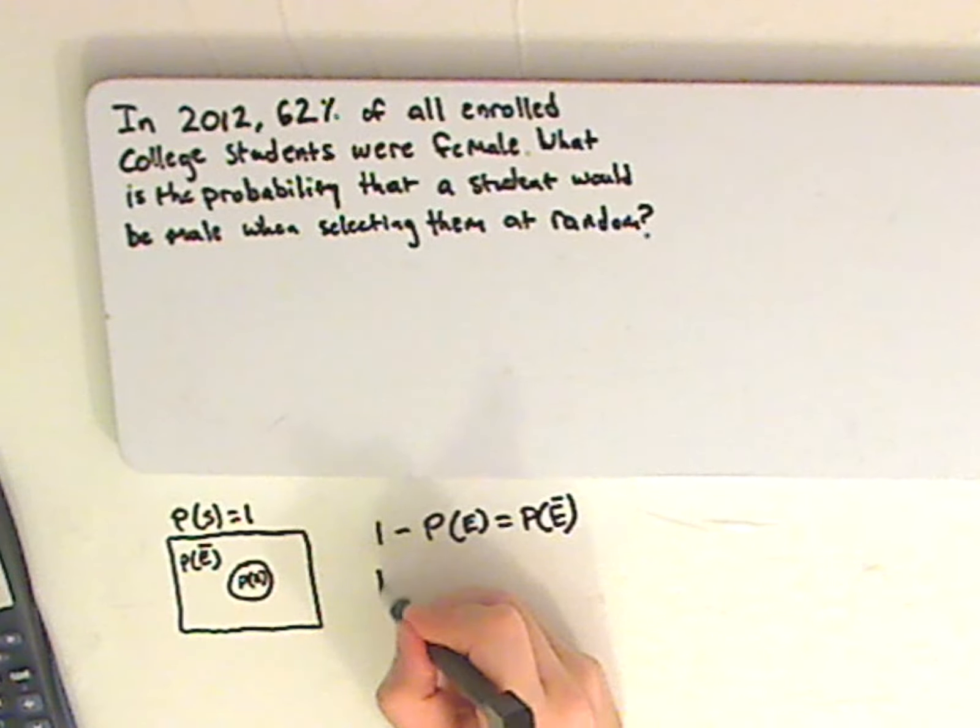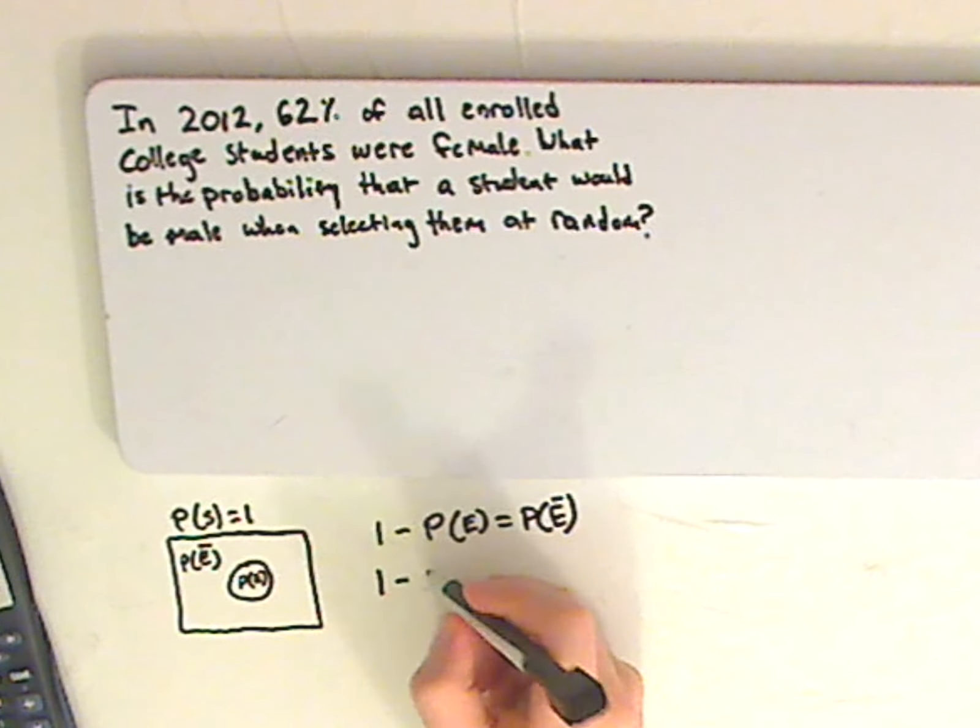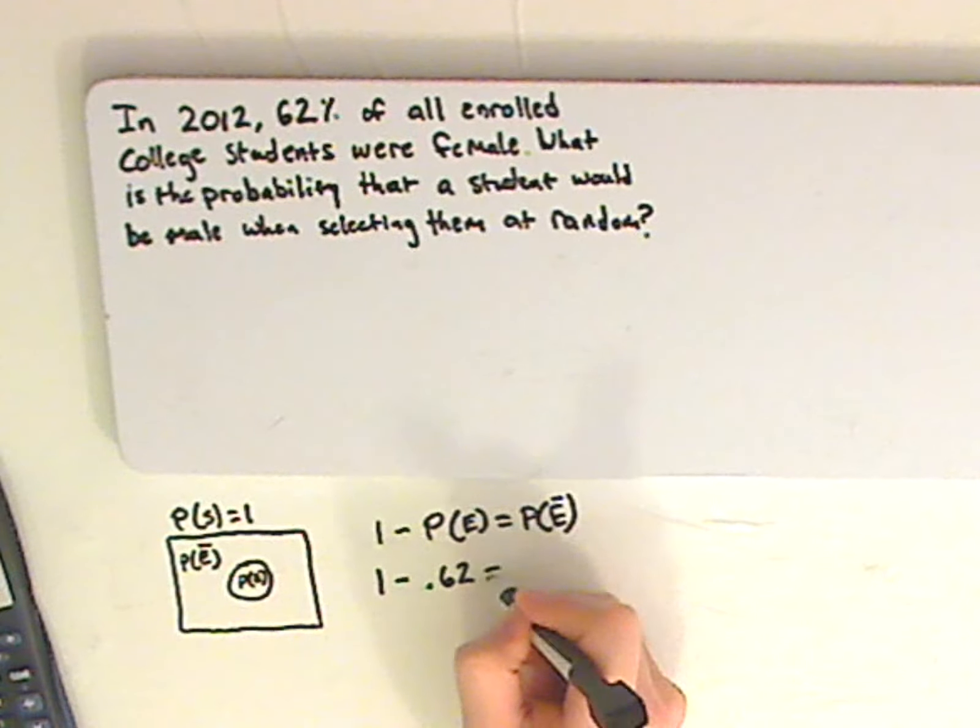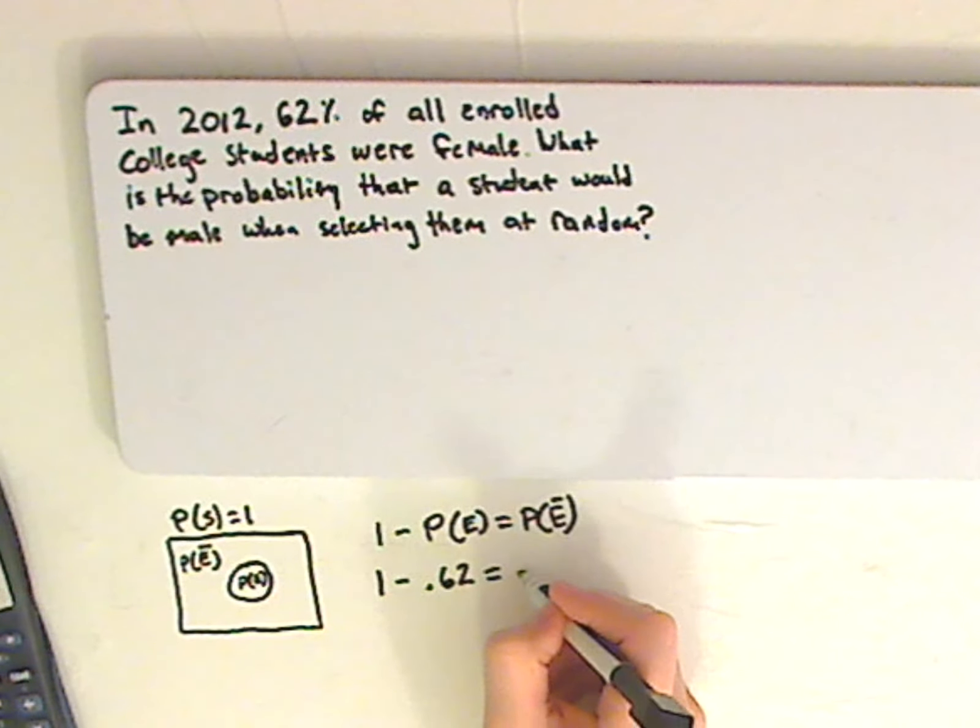So when you plug everything in, 1 minus 62%, and change 62% to a decimal, which is 0.62. I get 0.38.